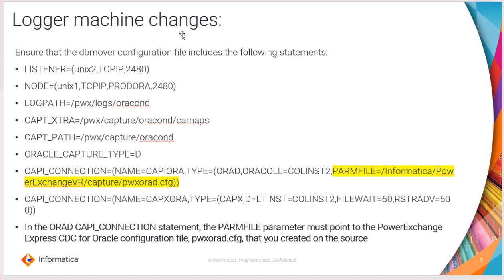These are the logger machine changes. In the logger machine, you should have the DB mover configuration with the listener node statement, and the CAPI path and CAPX extra settings accordingly. Make sure you have the PWX ORA file location pointing to the source machine listener.